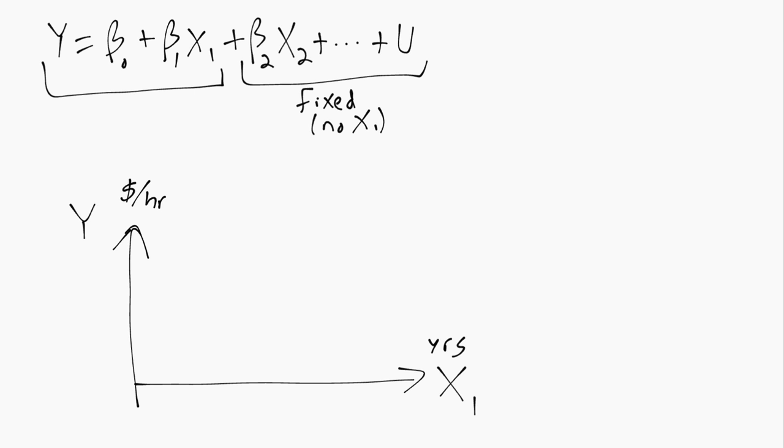Then from algebra we know the slope is telling us if we move one unit to the right, which in this case is one year, how much up do we go. So this is beta 1 the slope times one year and we can see this is a vertical distance. So it must be in the units of y which are dollars per hour.